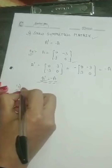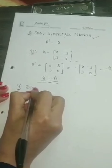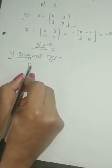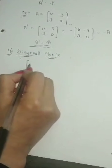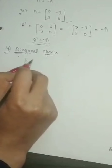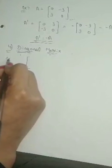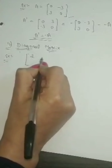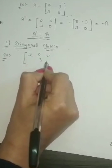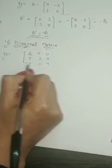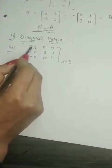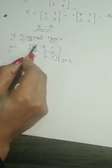The next form of matrix is called diagonal matrix. In a diagonal matrix, we will be having elements only in the main diagonal; the other elements will be 0. For example, a matrix of order 3 into 3 with 2, 3, 4 on the main diagonal and 0 in all other positions. Only in the main diagonal the elements are there; the other elements are 0.